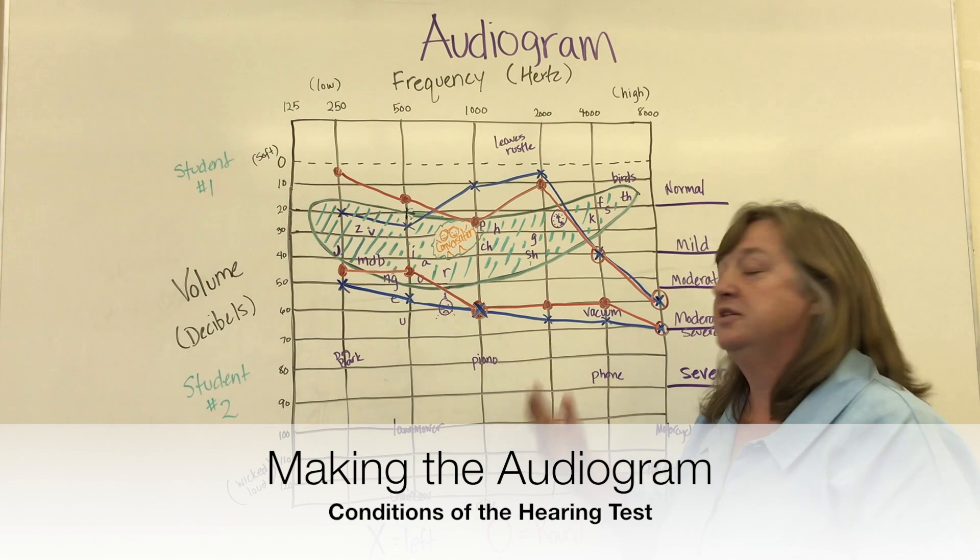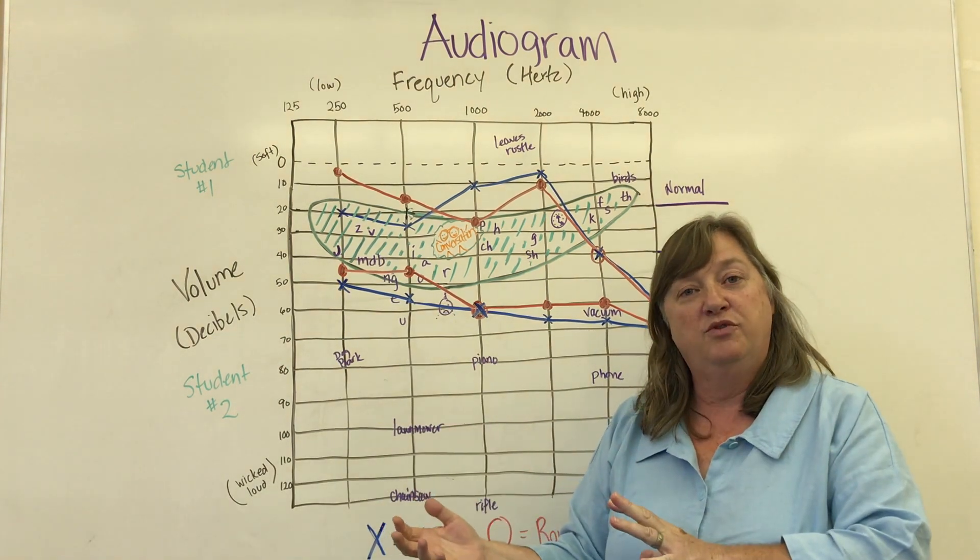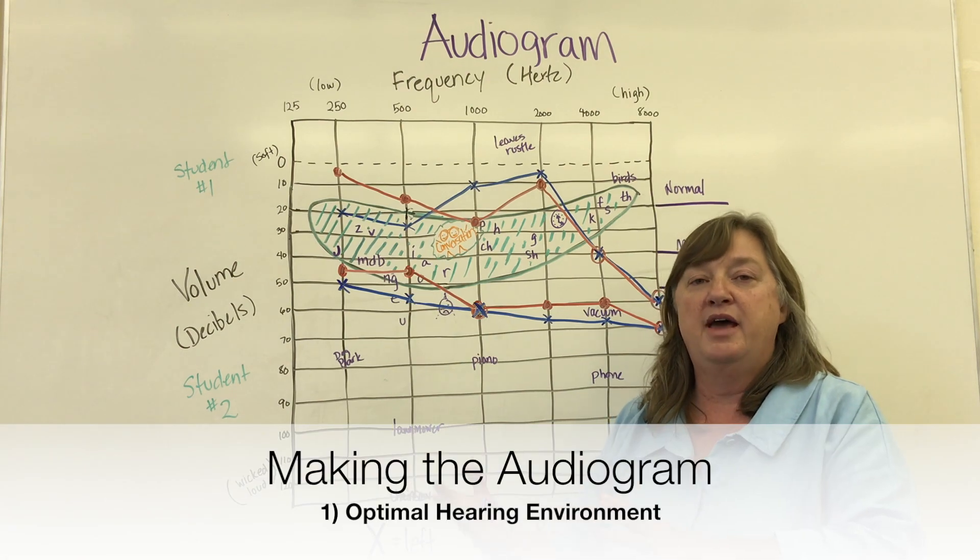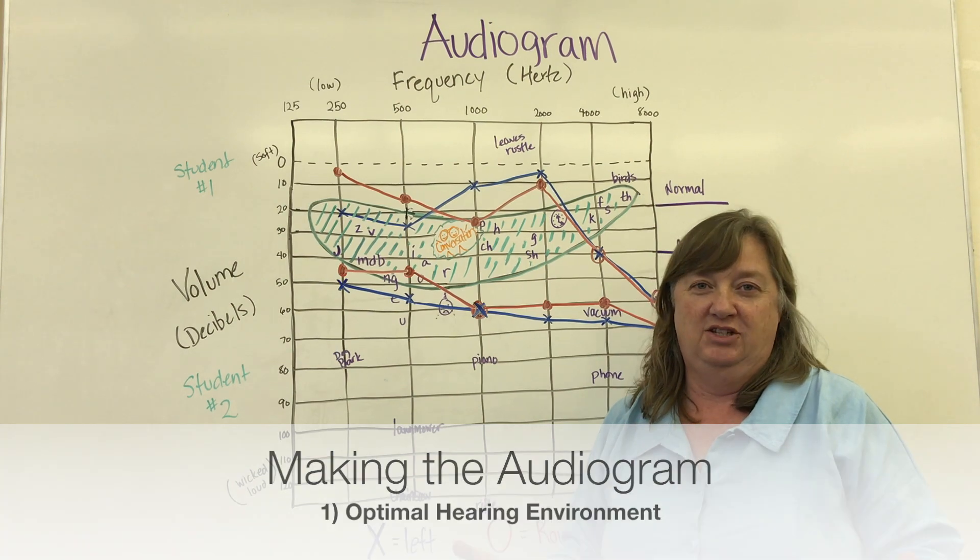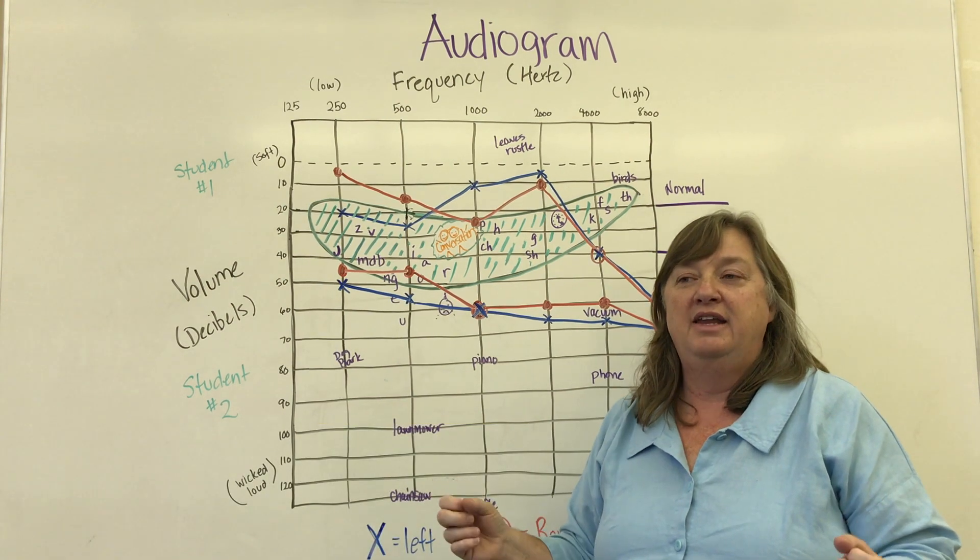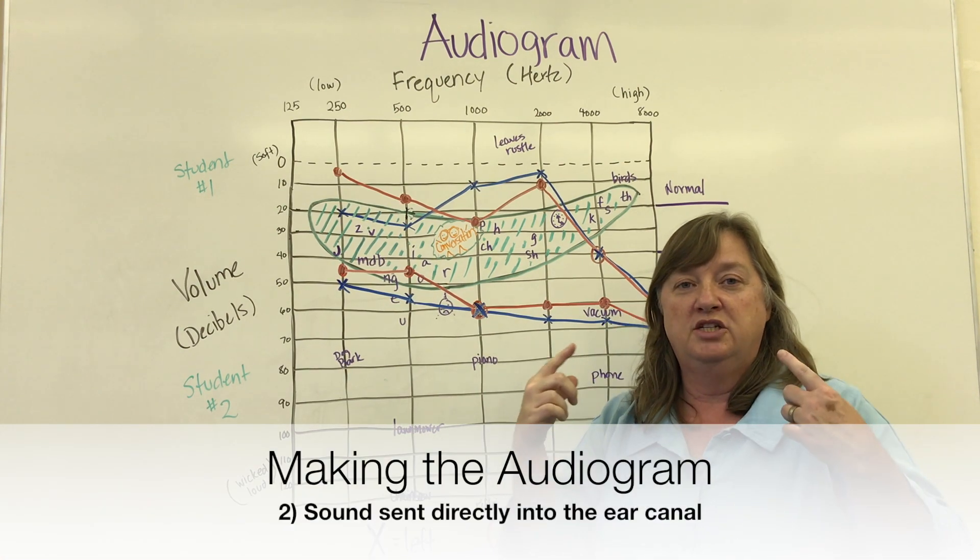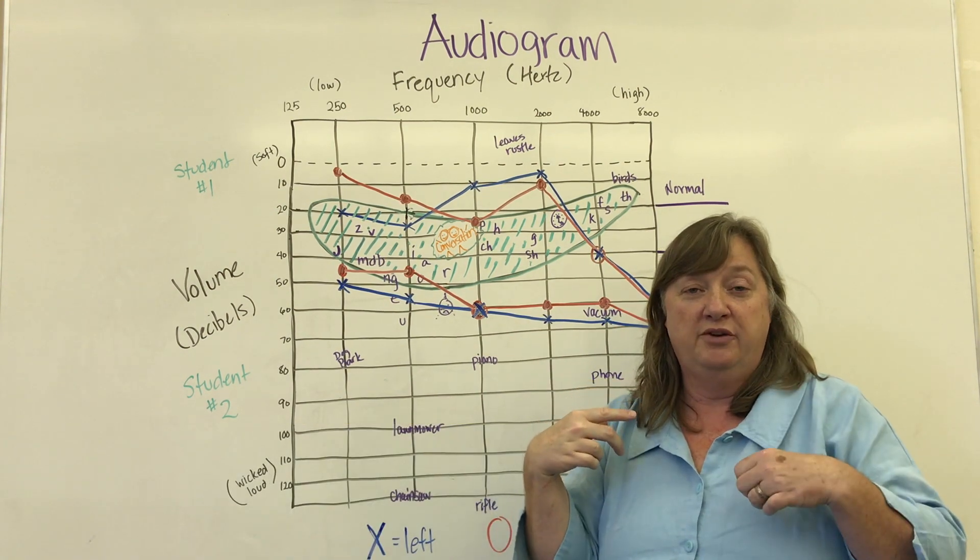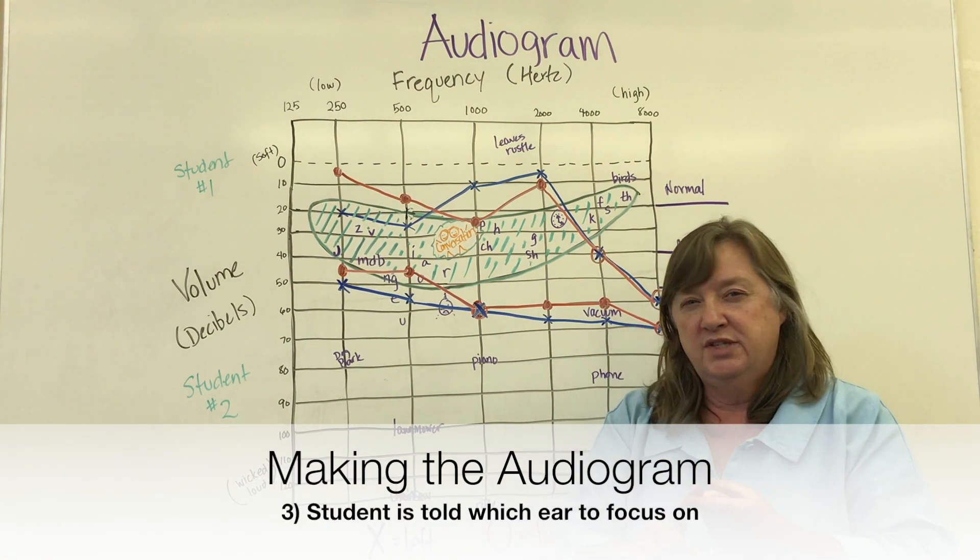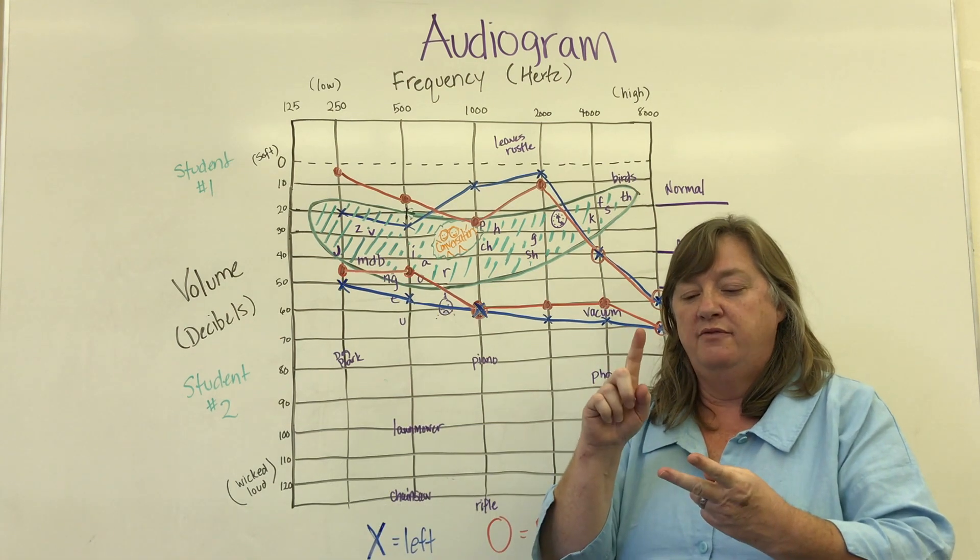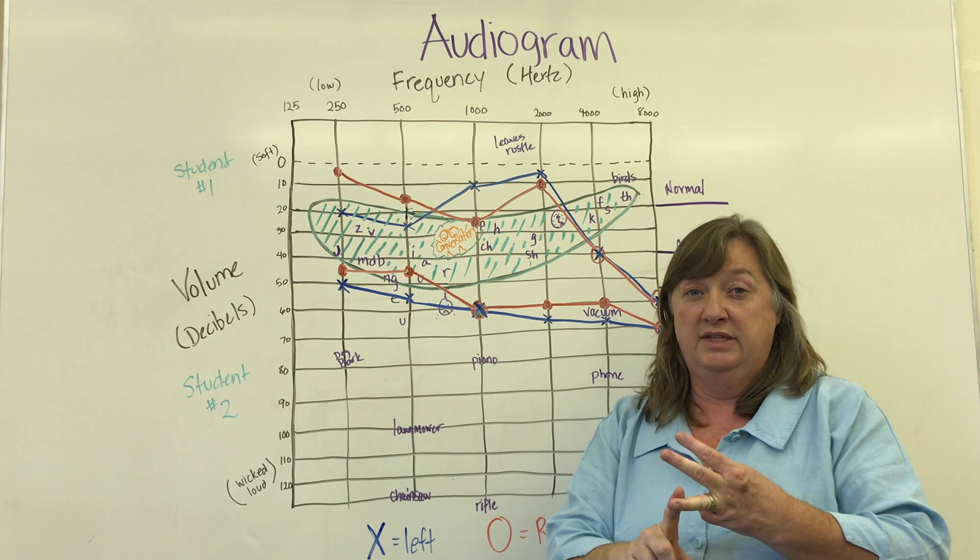When a student or anybody goes and gets their hearing tested, they're placed inside a soundproof booth. And in that booth there is no sound at all. So it's optimal listening conditions. Then they have little inserts that they place in your ears and the audiologist will send a sound. They'll test one ear at a time and they'll tell you which ear it is. So you have no sound, you have direct audio input into your ear, and you're being told which ear to listen to.